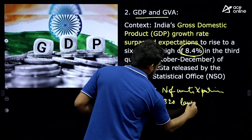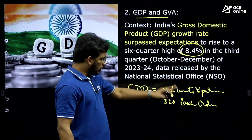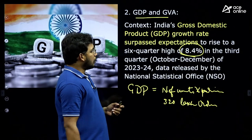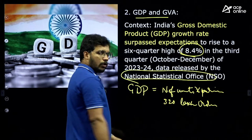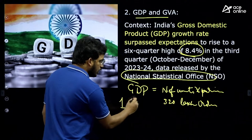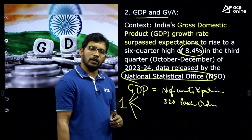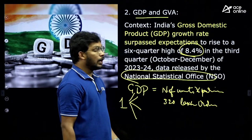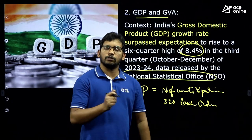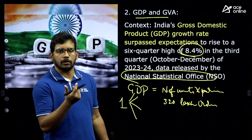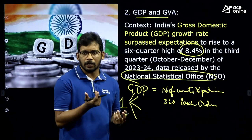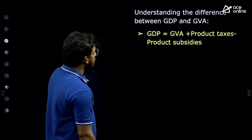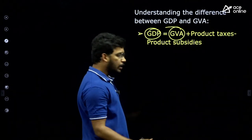GDP is released every quarter — for every year it is calculated, and within one year there are four quarters, so every three months it is also released. There is a significant jump reported, but there is also criticism that because some elections are coming, an exaggerated figure was put forward. Some economists raised this concern. Let's understand the difference between GDP and GVA before discussing this discrepancy.